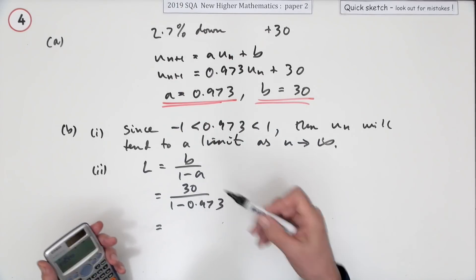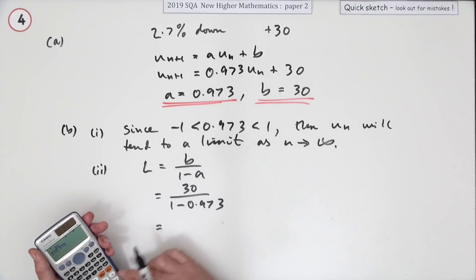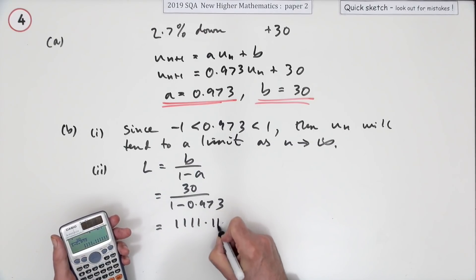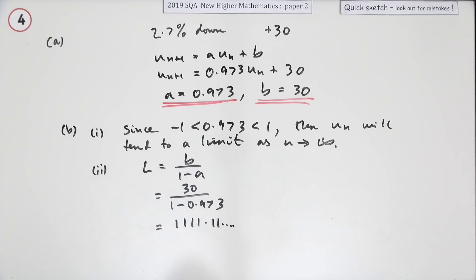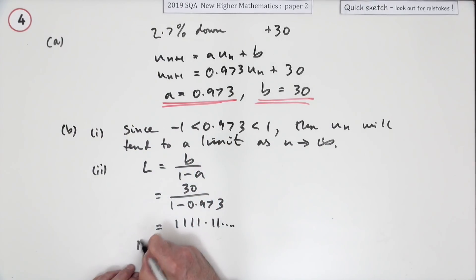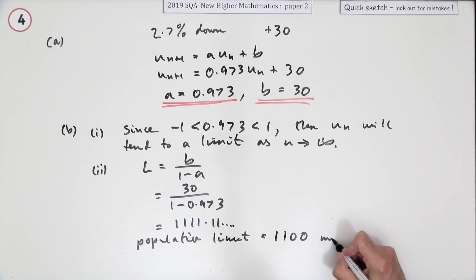But you may as well, it's paper 2, just press the buttons. So if you press the buttons on that it comes out as 1111 point all the ones, but it does say to the nearest hundred. So we'll say population limit is 1100.